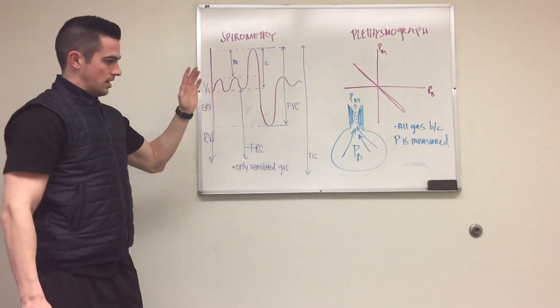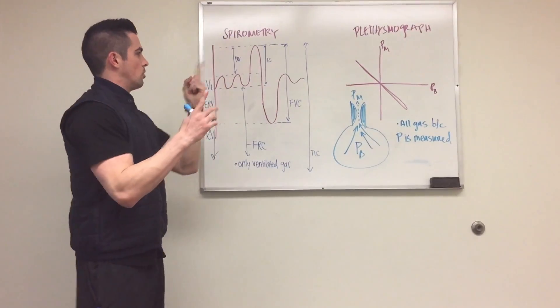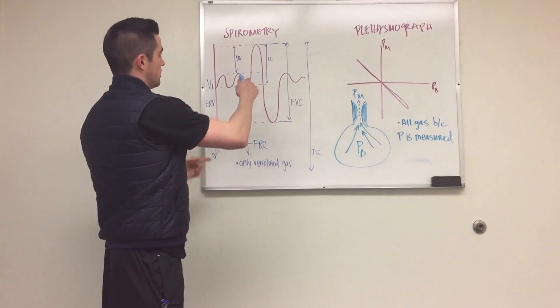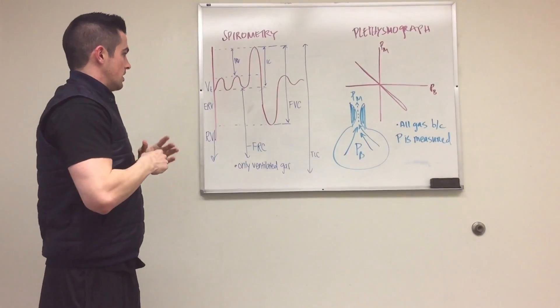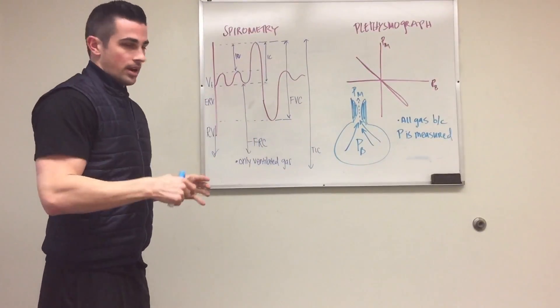When you're doing spirometry, there's also one more thing called the forced expiratory volume in one second. It measures, in one second, how much did you expire. And this compares it to the forced vital capacity.